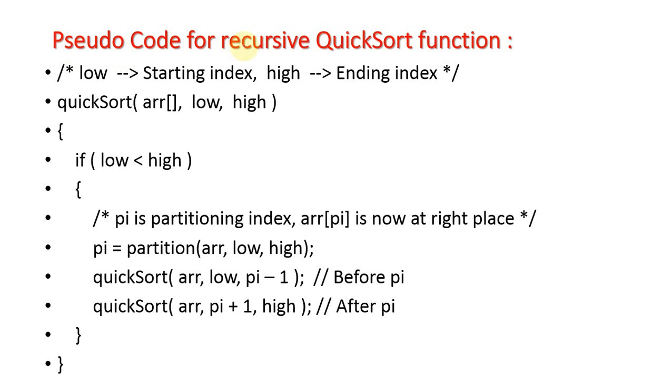Here is the pseudocode for recursive QuickSort function. Low is the starting index, high is the ending index, zero and n-1 at the very starting. The array, low and high - zero and n-1 starting. Now QuickSort is called with array, values 0 to n-1. If low is less than high, pi now - partition. Now pi is partitioning index.